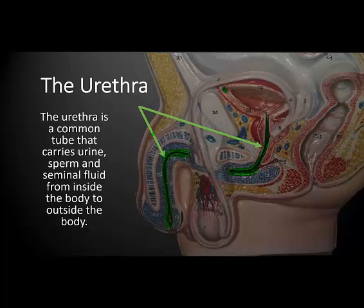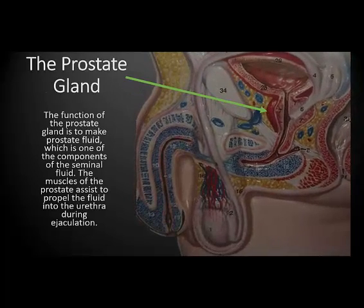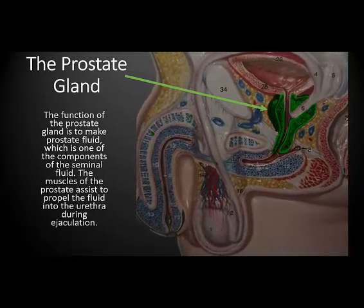After this, the sperm along with the seminal fluid — which is semen — is then going to travel through the urethra shown here. The prostate gland also functions to make components of the seminal fluid. The prostate gland also contains muscles that assist to propel the fluid forward during ejaculation.